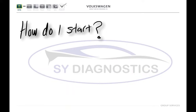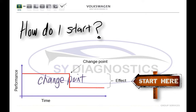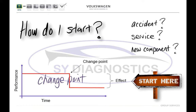One of the pieces of information you must establish is when the customer started experiencing this problem. This is known as the change point — the point at which the performance of part of the vehicle suddenly dropped. Hindsight tells us that change points can commonly be since a vehicle has had an accident, a service carried out, or maybe a new windscreen or accessory fitted. Have you ever had the experience of saying 'you never mentioned this problem started ever since it came back from the body shop'? That's a classic case of hindsight.